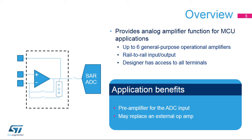Up to four operational amplifiers inside STM32G4 products function as a general-purpose analog amplifier, which may reduce the need for an external stand-alone op-amp. As these op-amps can be configured in stand-alone mode with all terminals available for the user, it is possible to use them as a voltage follower, non-inverting, and inverting amplifiers, as well as analog filters such as low- or high-pass filters.